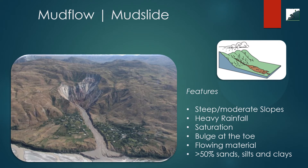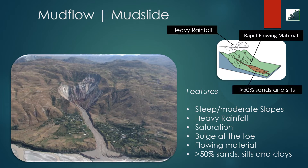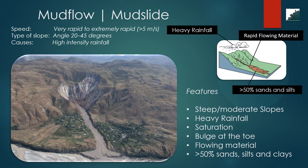A mudflow is an earthflow consisting of material that is wet enough to flow rapidly and that contains at least 50% sand, silt and clay sized particles. In some instances, for example in many newspaper reports, mudflows and debris flows are commonly referred to as mudslides. The speed of a mudflow is very rapid to extremely rapid, more than 5 meters per second. The type of slope is an angle of 20 to 45 degrees, and the causes are high intensity rainfall with a lot of precipitation.